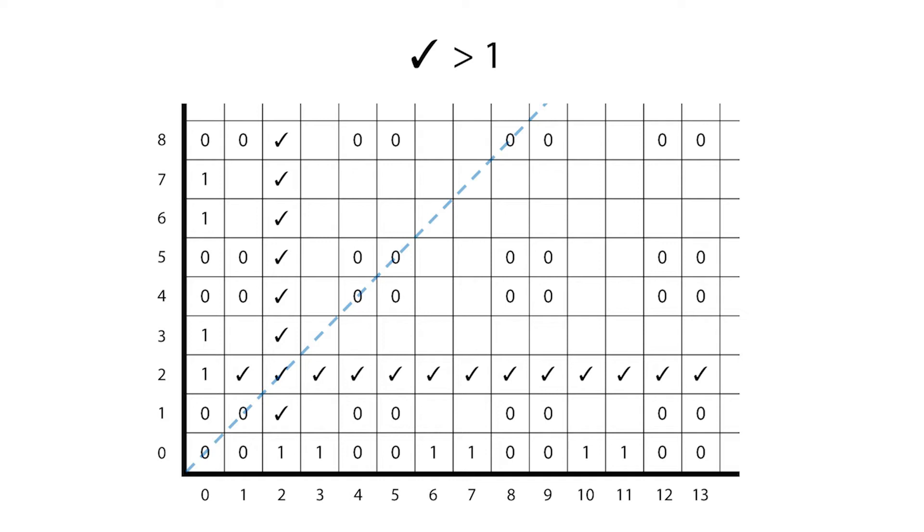We next consider row one. Every blank square in this row has two legal moves, south-south-west to a zero, or west-north-west to a checkmark of value greater than one. So its Grundy number is one.